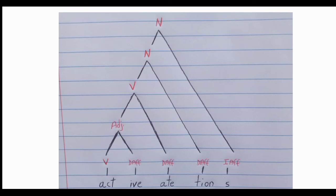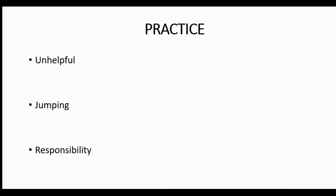Here are some practice exercises. Try to draw the morphological trees for these words: 'unhelpful' — which is an adjective, 'jumping' — which is a verb, and 'responsibility' — which is a noun. If you have any questions, please let me know and I will be there to guide you. It has been a pleasure — see you in the next video, have a nice time.